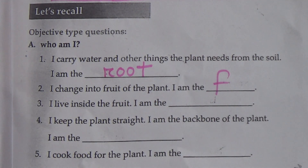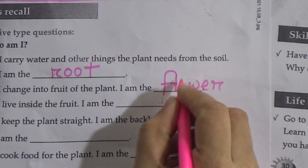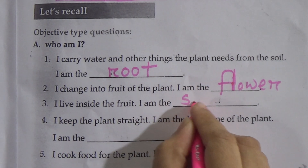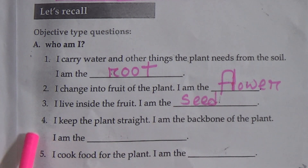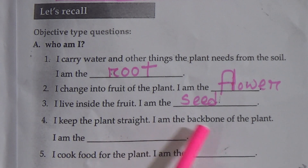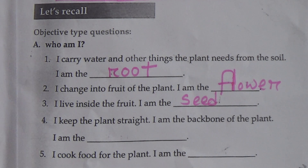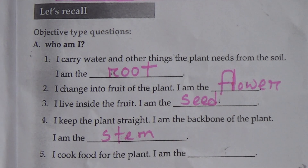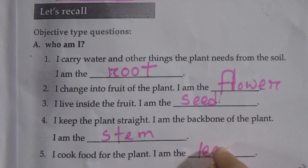Number three: I live inside the fruit. The answer is seed. Number four: I keep the plant straight — I am the backbone of the plant. The answer is stem, because stem is known as the backbone of a plant. Number five: I cook food for the plant. The answer is leaf, because leaf makes food for the plant.